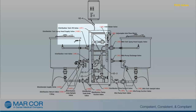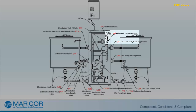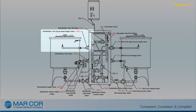When opened, V7, the Distribution Tank Fill Valve, allows for the transfer of solution from the Mixed Tank to the Distribution Tank. When adjusted, V8, the Adjustable Inlet Auto-Fill Flow Meter, regulates the fill rate into the Mixed Tank. When opened, V9, the Distribution Inlet Valve, allows for flow from the Mixed Pump into the Distribution Tank. When opened, V10, the Distribution Spray Head Supply Valve, allows flow from the Mixed Pump to the Distribution Tank Spray Head. The Spray Head delivers spray to cover internal portions of the Distribution Tank.